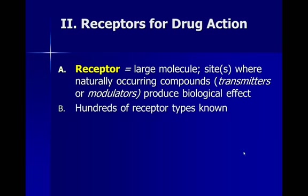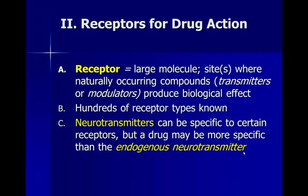There are hundreds of different receptor types known — we know there are several different kinds of dopamine receptors, just to give an example. Neurotransmitters are mostly what we're interested in; they can be specific to certain receptors, causing specific effects only at those receptor locations. It's important to understand that a drug might be more specific than an endogenous neurotransmitter — one naturally occurring in the brain. A drug is what we call an exogenous neurotransmitter, externally administered, and sometimes it will affect only a specific subset of neurotransmitter systems, such as selective serotonin reuptake inhibitors or drugs that affect dopamine.